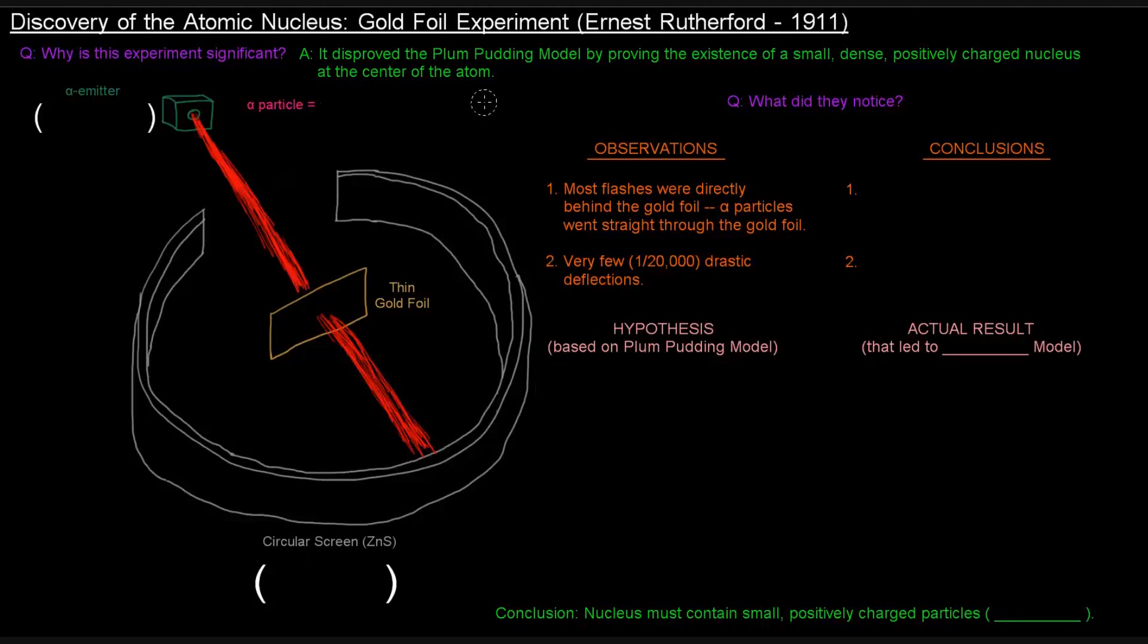So how did he do that? What was his sort of setup and how did he observe and conclude all that he concluded? Well, he set up this apparatus that had an alpha emitter, which shot alpha particles at a thin strip of gold foil. And around this gold foil was this circular screen that would basically detect the alpha particles by giving off a flash of light when it was hit by that alpha particle.